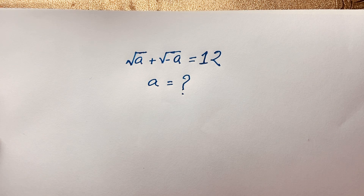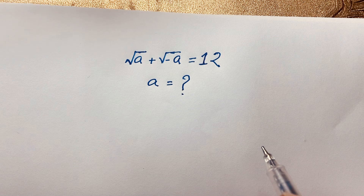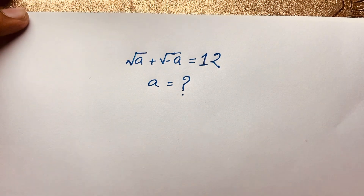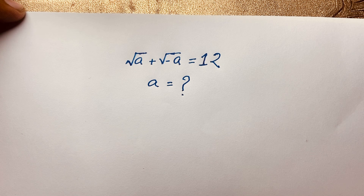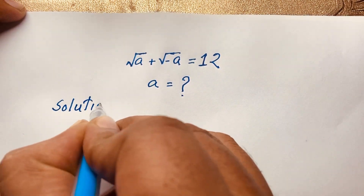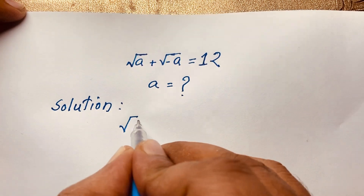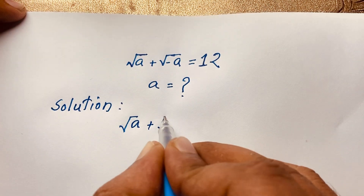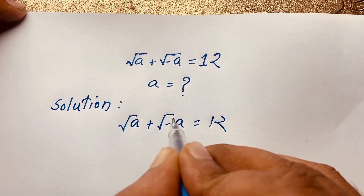Hello everyone. In this video, we have solved a nice radical math Olympiad question. This question is: square root of A plus square root of negative A is equal to 12. We have found out what is the value of A in this radical math Olympiad question. This is our math question.